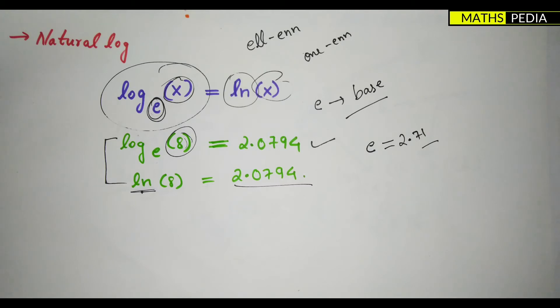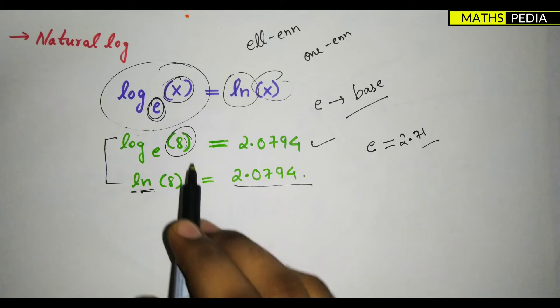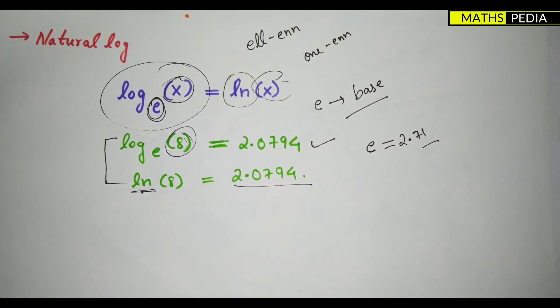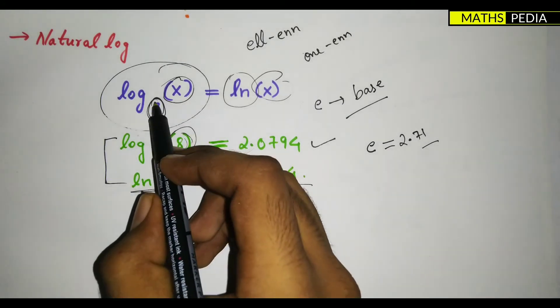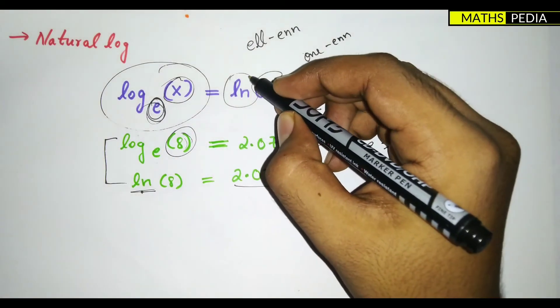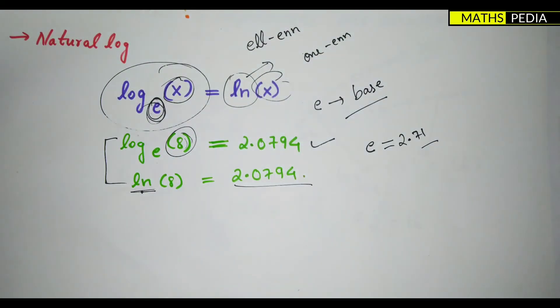So basically we understood that ln is nothing but the log itself. Whenever the base becomes e, then we will term it as ln, or we can say natural log.